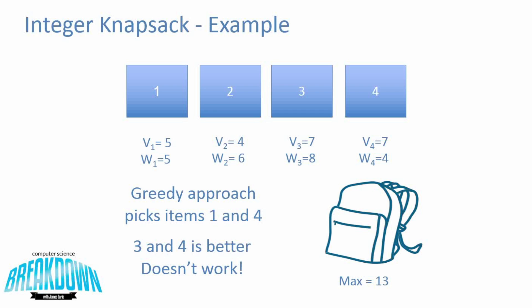The difference is that we can only take a single portion of an item — we can only take it or not take it. In the fractional problem, we were able to take, say, half of an item and take its proportional amount of value with it. In this case, we can only take or not take an item, and as a result, this greedy approach isn't really going to behave the way we want it to.